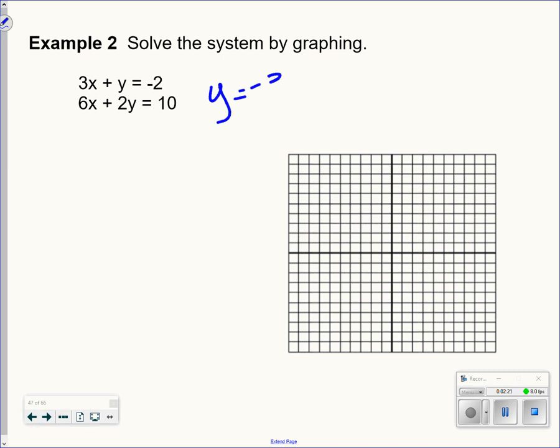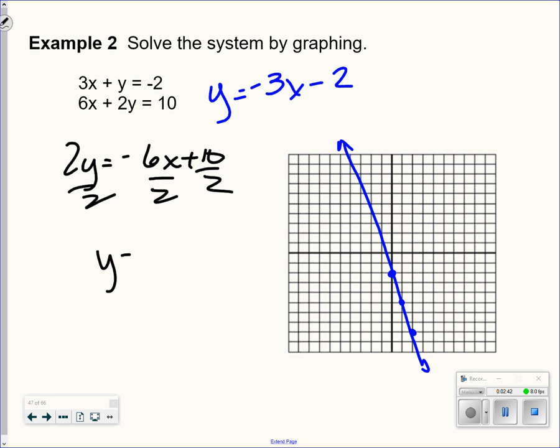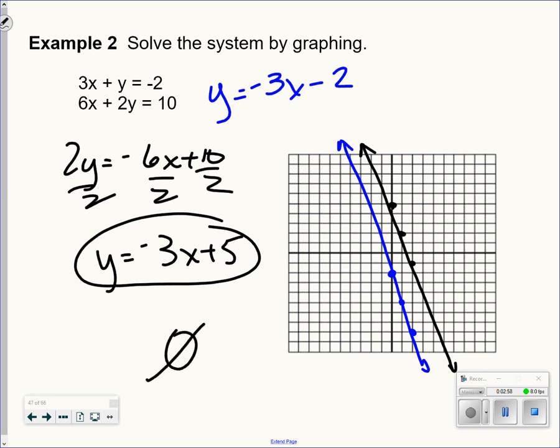Next one, I'm going to graph the top one. So I'm going to solve it for y. So crosses at negative 2 with a slope of negative 3. I'm going to subtract 6x from both sides and divide everything by 2. I notice that it has the exact same slope, but a different y-intercept. So these two lines are parallel to each other, so we would write no solution.